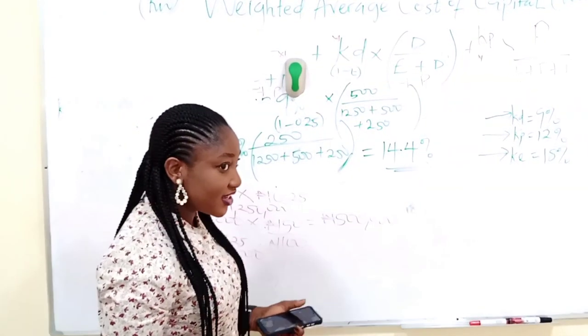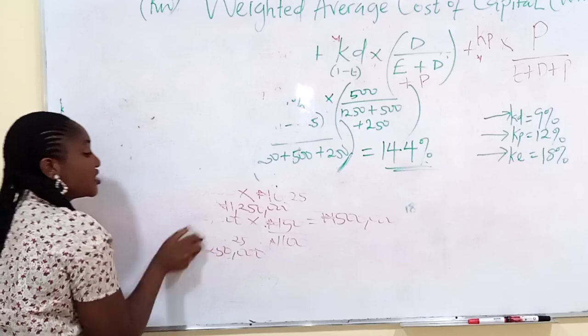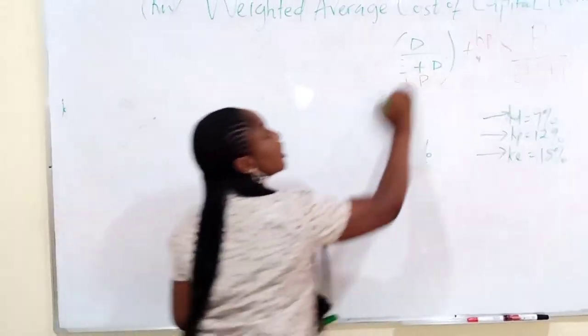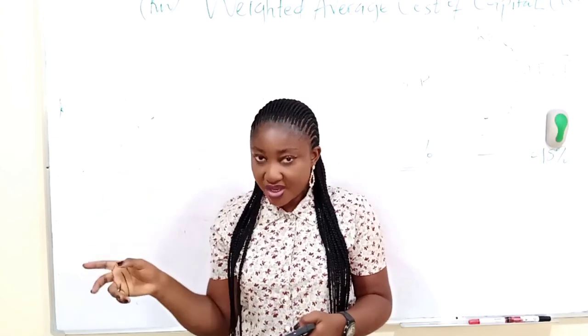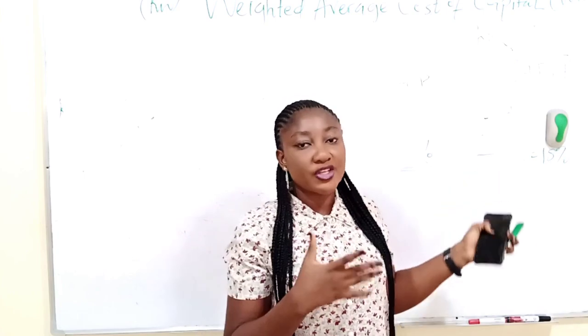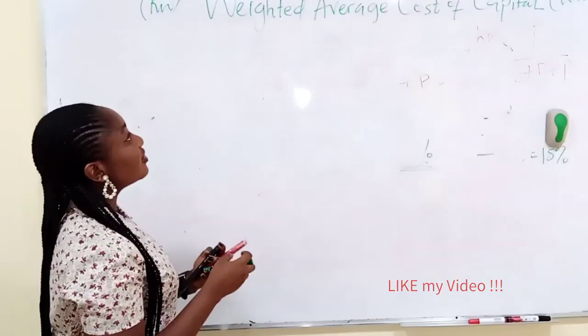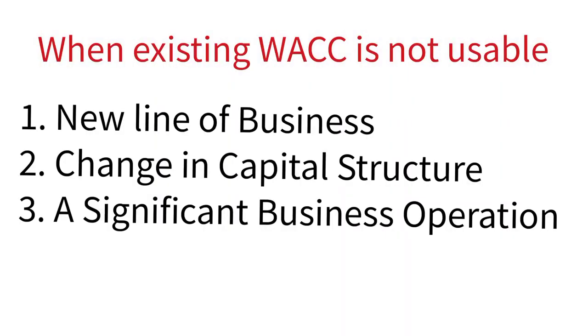We are not done with cost of capital. We are still going to cover project-specific cost of capital. Project-specific cost of capital is the cost of capital that is used when WACC cannot be used. There are three circumstances that will make your WACC useless. Number one, when there is a new line of business, the existing WACC cannot be used. Maybe a company is manufacturing milk and now they want to start manufacturing school sandals. That's a new line of business.